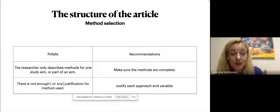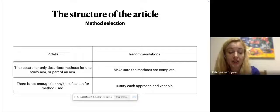And sometimes researchers, especially, they make mistakes. Sometimes researchers only describe methods for one study aim or part of the aim. So make sure that the methods are complete. You are explaining step-by-step, every methodology step, what you're doing. That is your right to do the analysis and to proceed with the data collection and to claim that your data collection, you claim the validity and reliability.